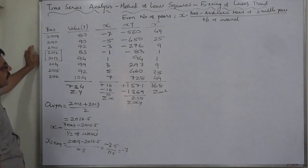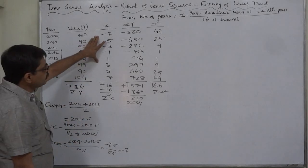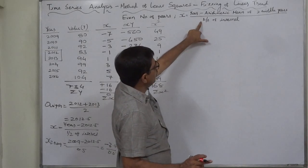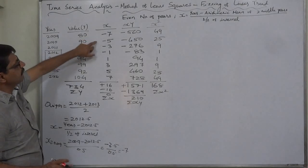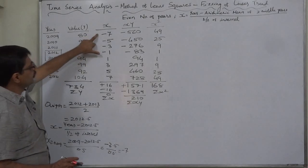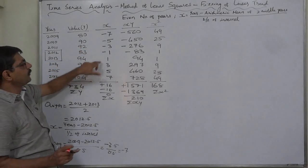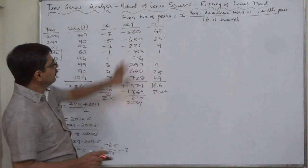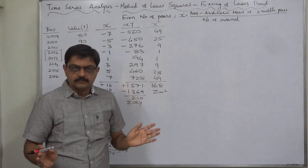One more thing I would like to explain. If we don't go for change of scale by dividing the difference by half of the interval, this will be negative 3.5, negative 2.5, negative 1.5, negative 0.5, positive 0.5, positive 1.5, positive 2.5, positive 3.5, and the values will be accordingly different.